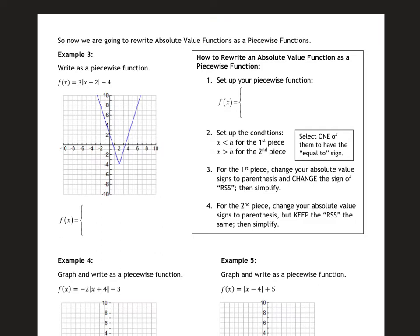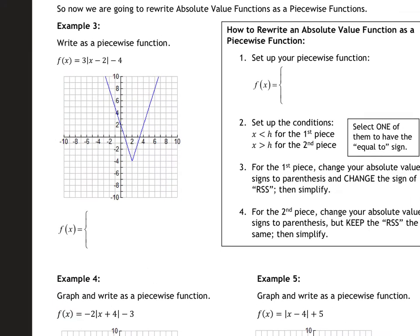For the first piece, you're going to change the absolute value signs in the parentheses, change the sign of the right-side slope, and then simplify. For the second piece, you're going to keep the absolute value signs in the parentheses, keep the right-side slope, and then simplify.